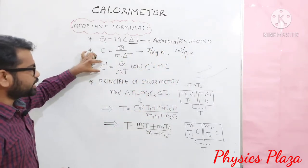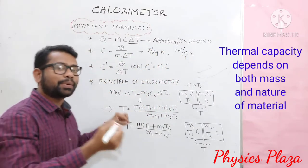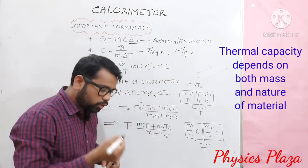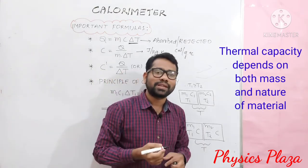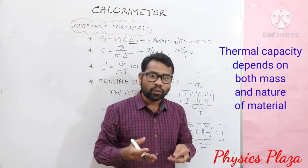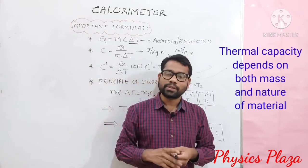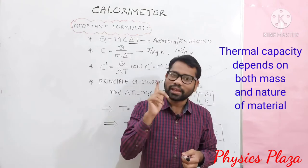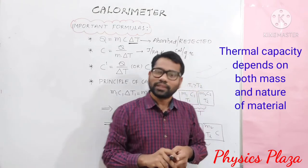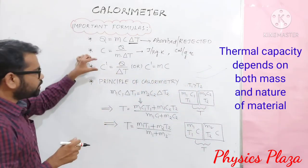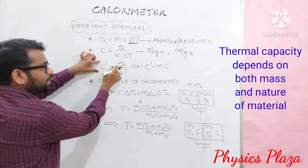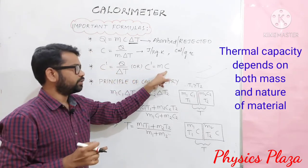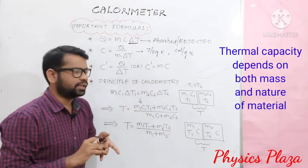Next, C-dash — what is C-dash? Heat capacity or thermal capacity. The amount of heat energy required to raise the temperature of the whole body by 1 degree Celsius or 1 Kelvin is called thermal capacity. Either we can use C-dash equal to Q by delta t, or C-dash equal to m into c, to calculate the thermal capacity.